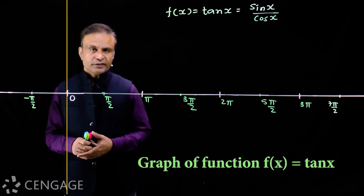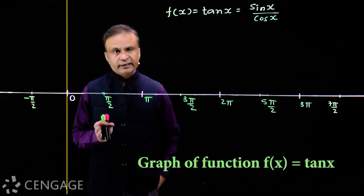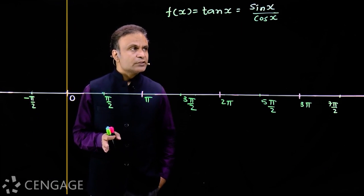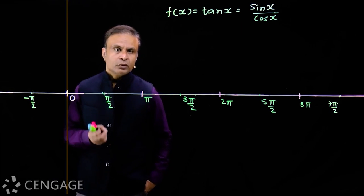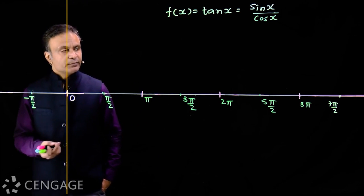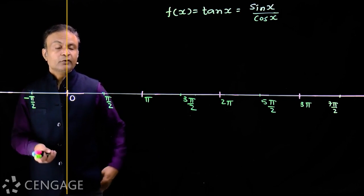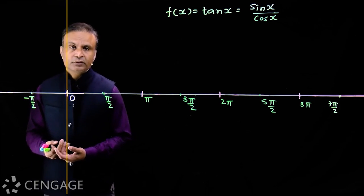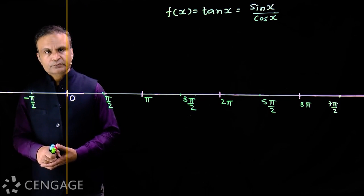Now let's draw the graph of the function f(x) = tan x. Since tan x = sin x / cos x, this function is defined only for non-zero values of cos x. We cannot take values of x for which cos x is zero — we must have non-zero values of cos x.